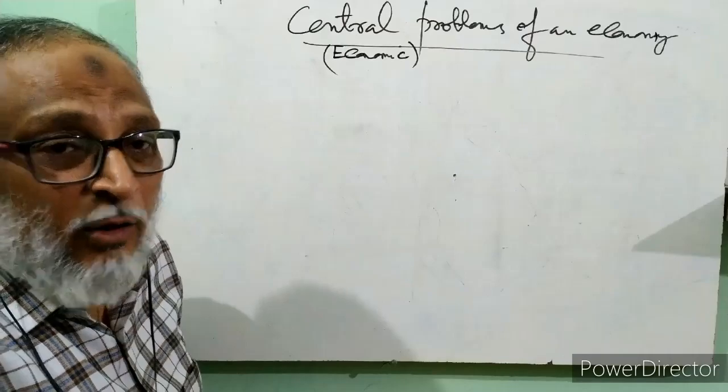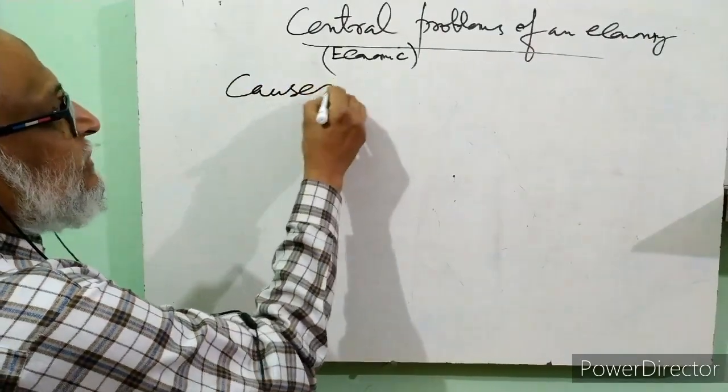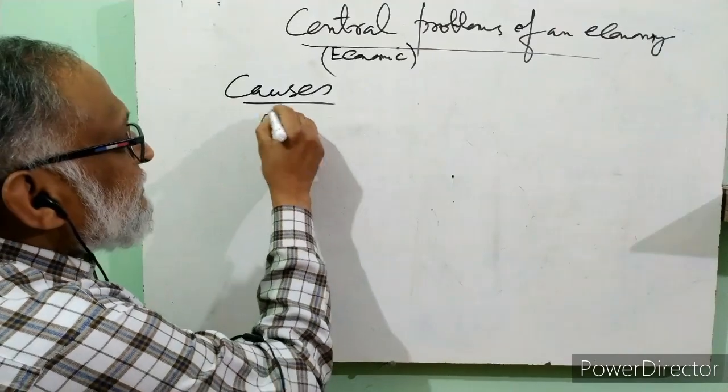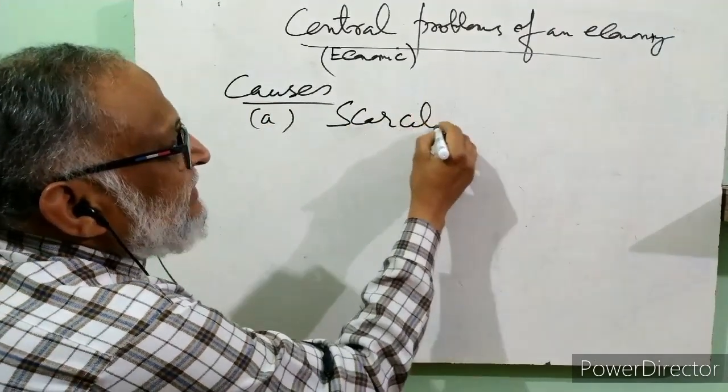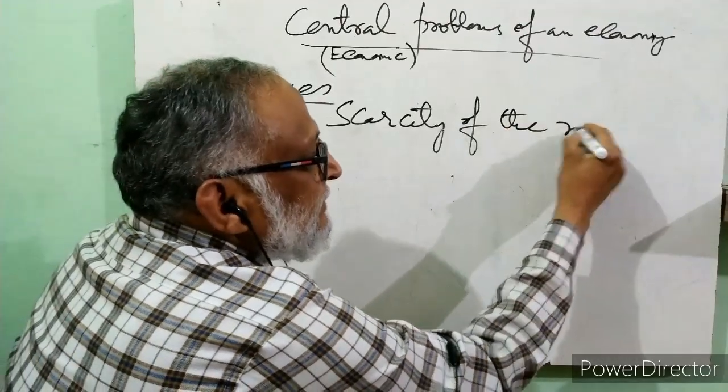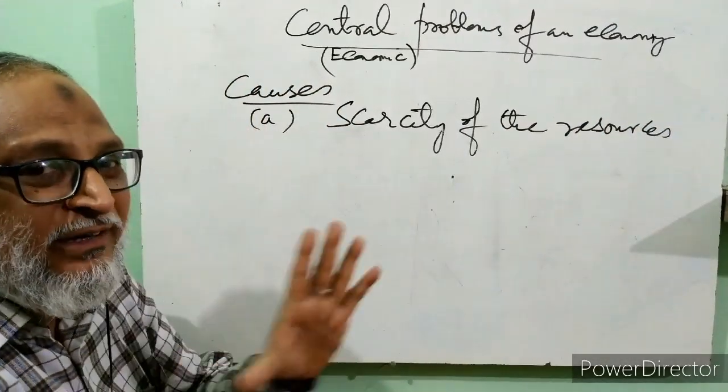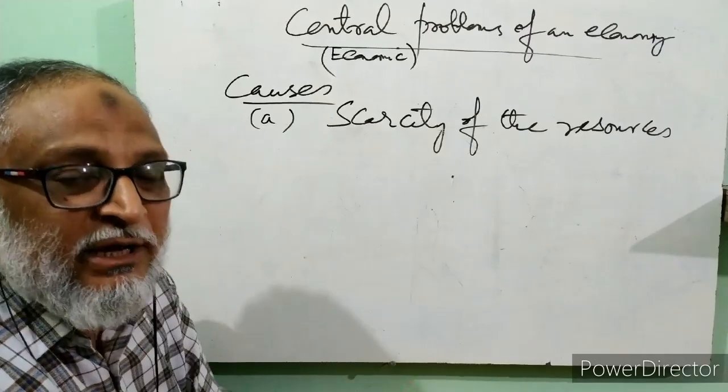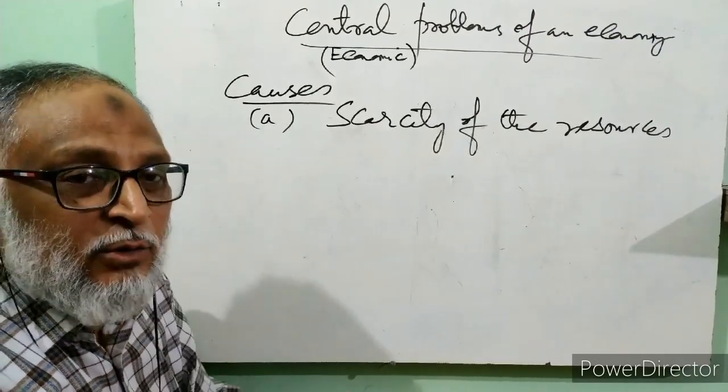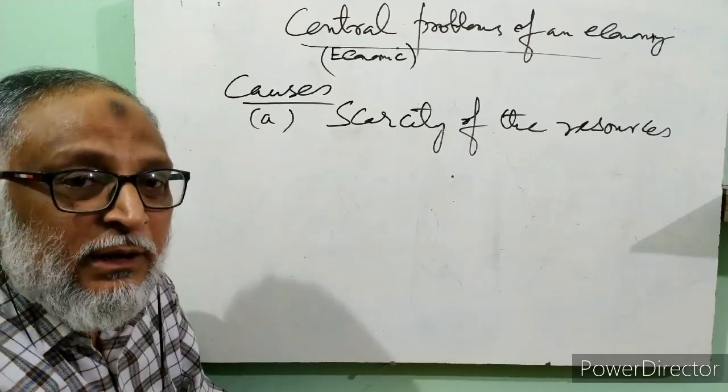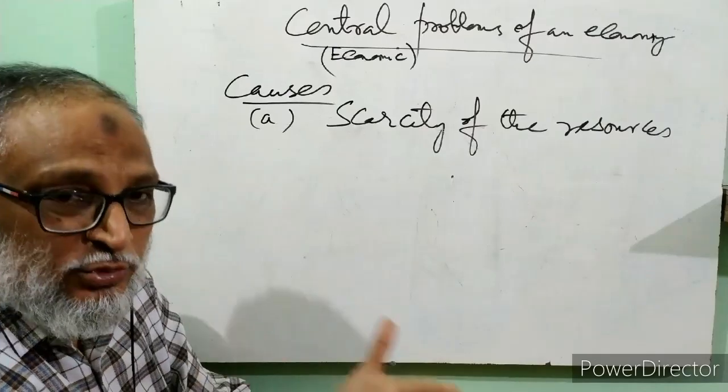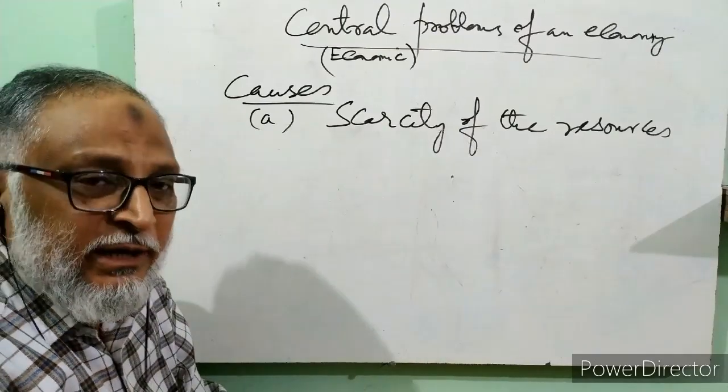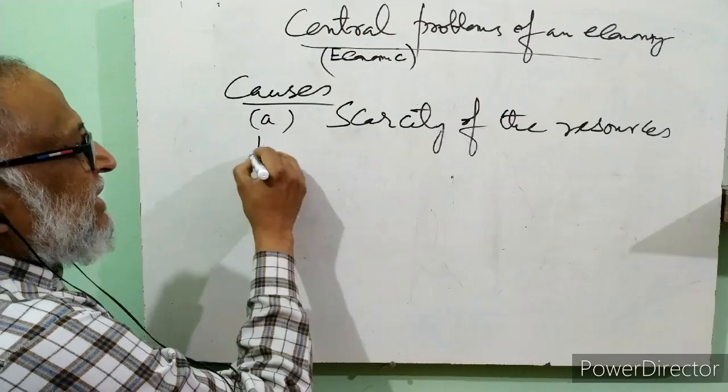First, we will discuss the causes of economic problem. The first main cause is scarcity of resources. There is no country in the world which has abundant resources. All countries may have some resources in abundance and lack others. If we take India, we have more manpower which is cheaper, but lack machinery and technology. In developed countries, there is lack of manpower but other resources are abundant.